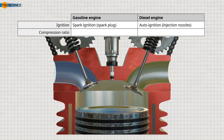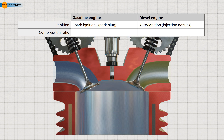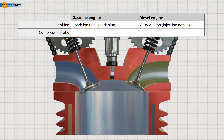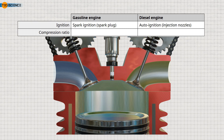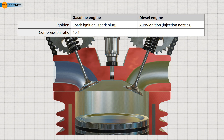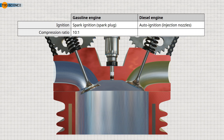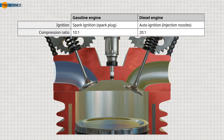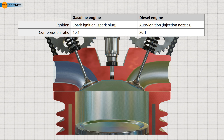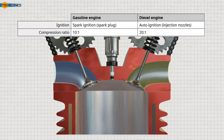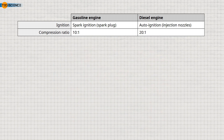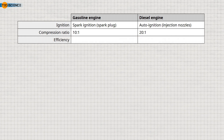To achieve the required compression temperatures, diesel engines have much higher compression ratios than gasoline engines. While gasoline engines typically have compression ratios of around 10 to 1, diesel engines have double that, at around 20 to 1. The higher compression ratio results in a higher ultimate pressure, which makes the force applied to the piston in a diesel engine more effective, resulting in a higher efficiency.